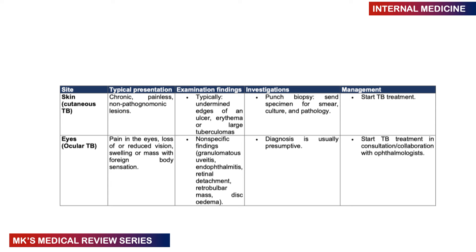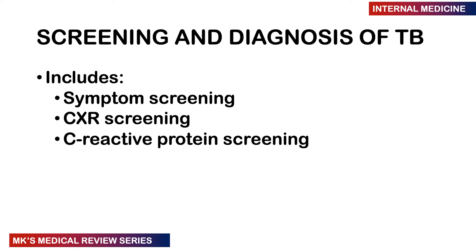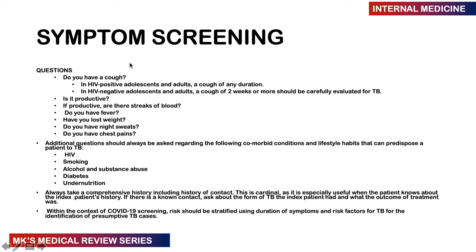Screening for TB is done in three ways: through symptoms, chest X-ray, and C-reactive protein. Symptom screening involves asking whether the patient has a cough — in HIV-positive adults and adolescents, a cough of any duration warrants TB suspicion; in HIV-negative patients, more than two weeks is the usual threshold. Also ask about fever, night sweats, weight loss, chest pain, the nature of the sputum, and risk factors such as HIV, smoking, alcohol, diabetes, and undernutrition.